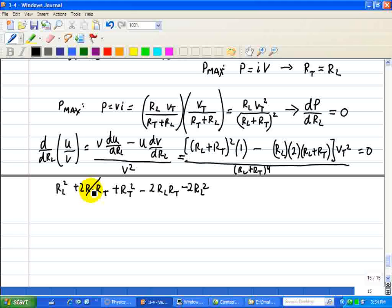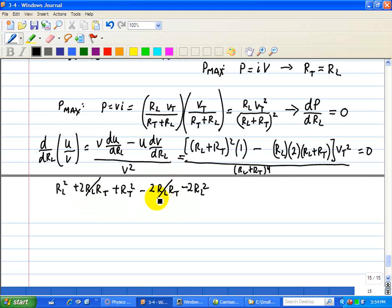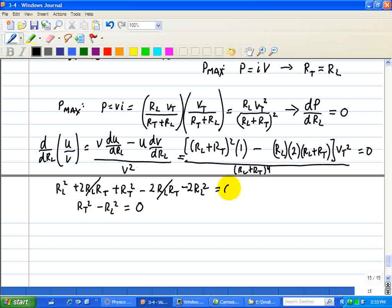So we see that the 2RL RT cancels, and then we're left with RL squared minus 2RL squared. So we have RT squared minus RL squared is equal, and we note that the numerator is equal to 0.